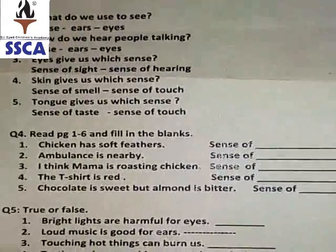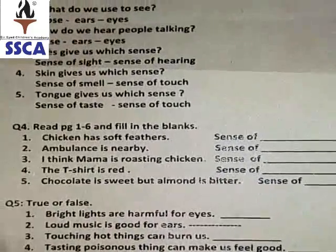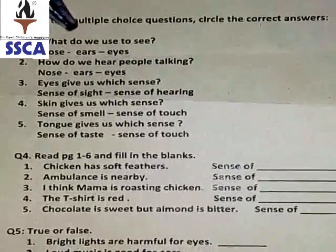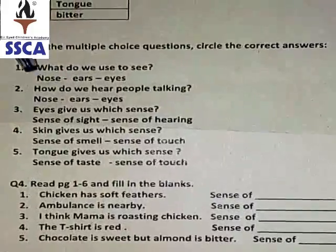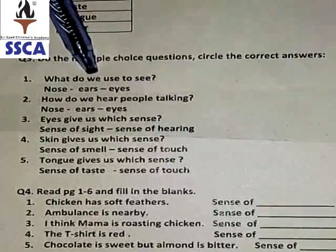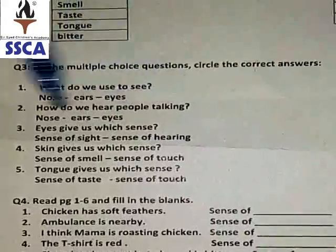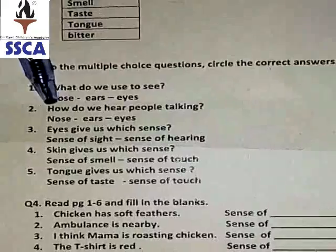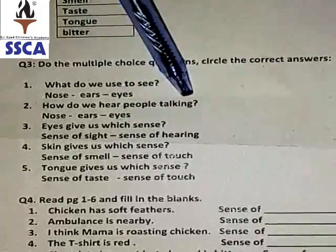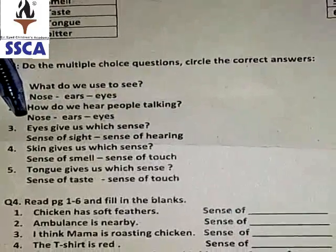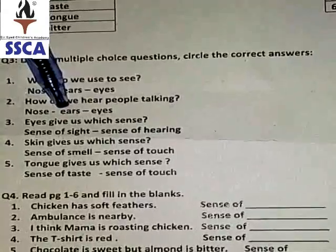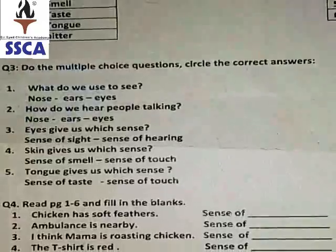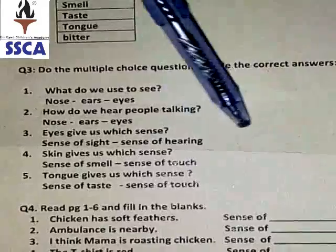Question number three: do the multiple choice questions and circle the correct answer. The first one is: What do we use to see? We see with our nose, we see with our ears, or we see with our eyes — circle the correct answer in your copy. The second one is: How do we hear people talking? We hear people talking with our nose, with our ears, or with our eyes — think about it and circle the right answer in your copy.